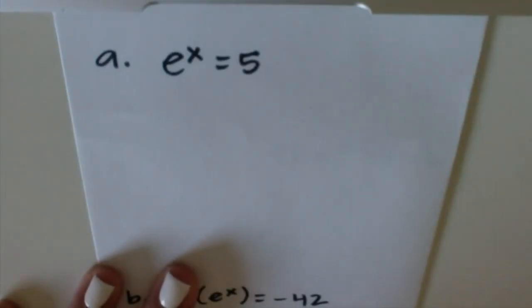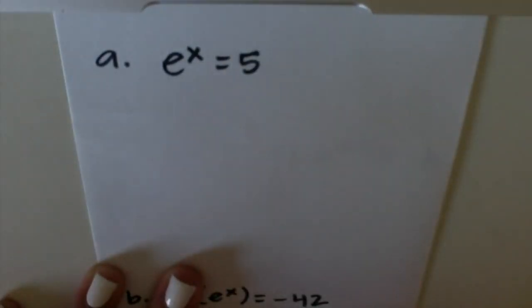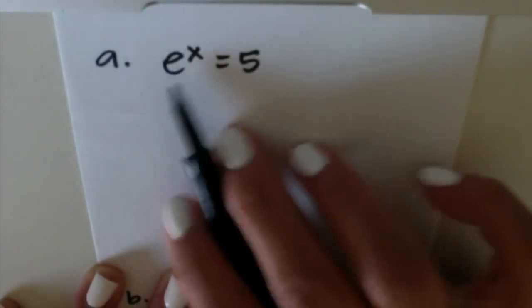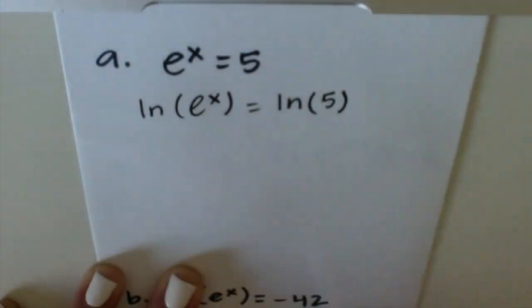This first example is e^x = 5. If you'll notice, the x is in the exponent. We're going to take the natural log of both sides because the base number is e. So we're going to go ln(e^x), do the same thing on the other side, ln(5).